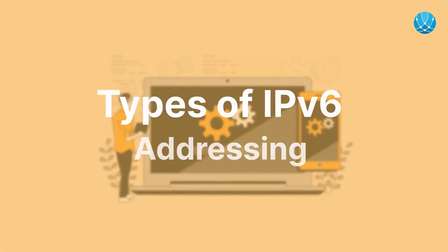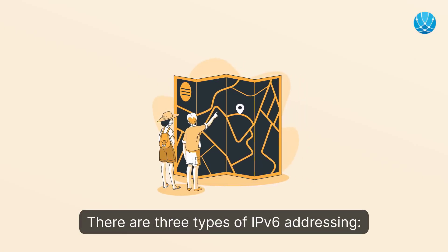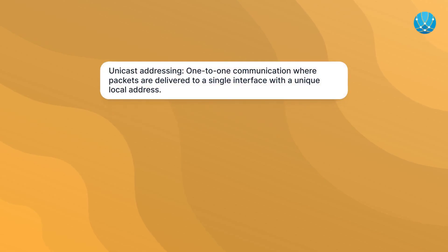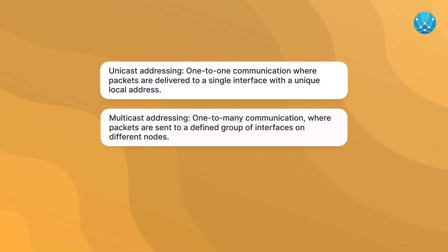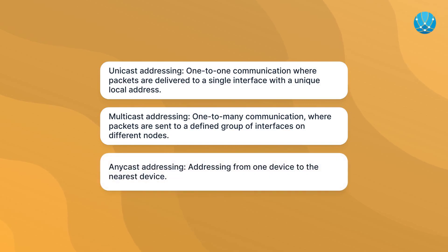There are three types of IPv6 addressing. Unicast addressing is one-to-one communication where packets are delivered to a single interface with a unique local address. Multicast addressing is one-to-many communication where packets are sent to a defined group of interfaces on different nodes. Anycast addressing sends from one device to the nearest device.